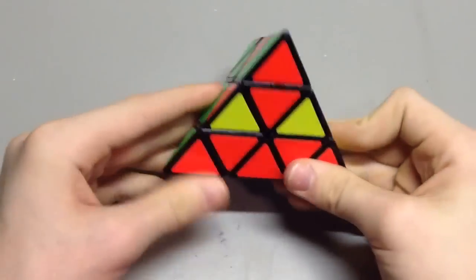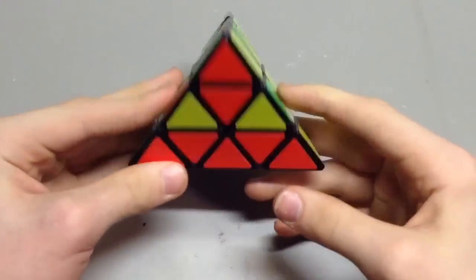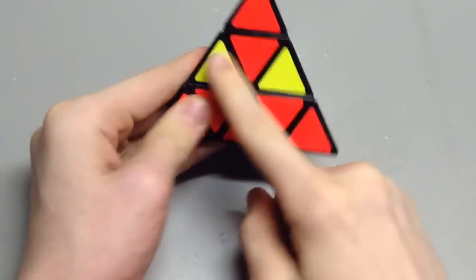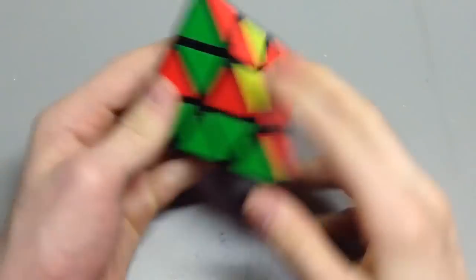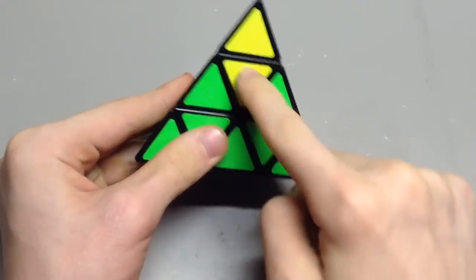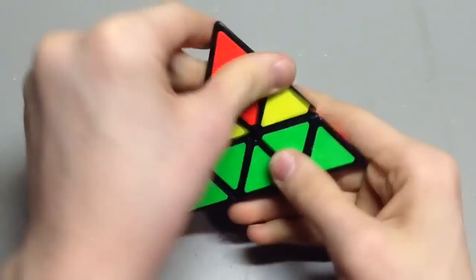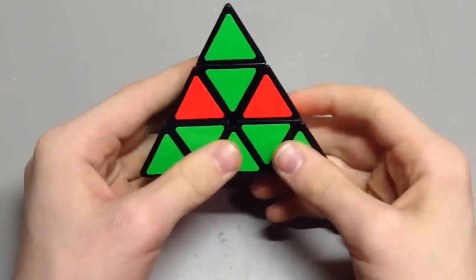Next case is very similar to the Sune on the 3x3. It's where there's two colors right next to each other, so you have like headlights on every side. And you want to have it so that this color matches up, not right here. So like that.